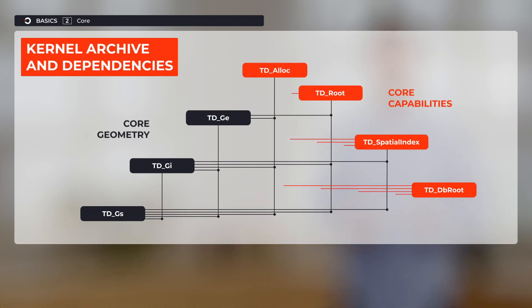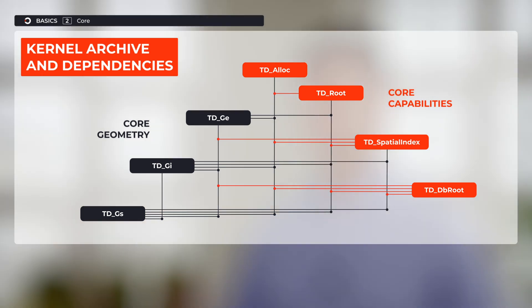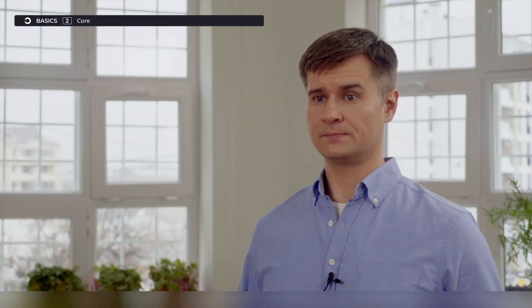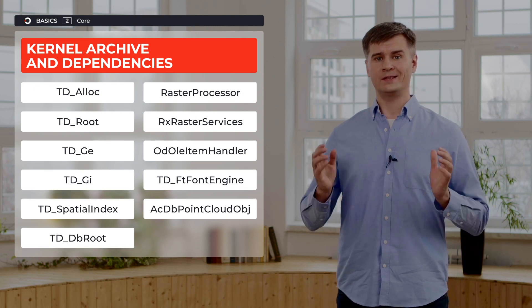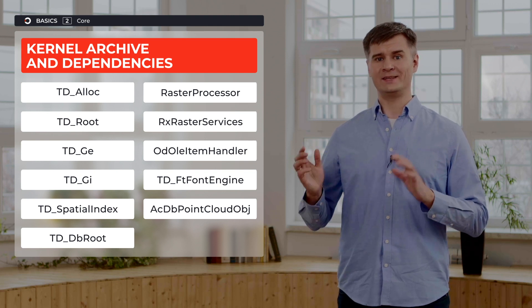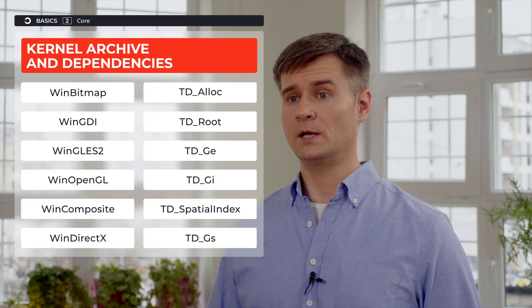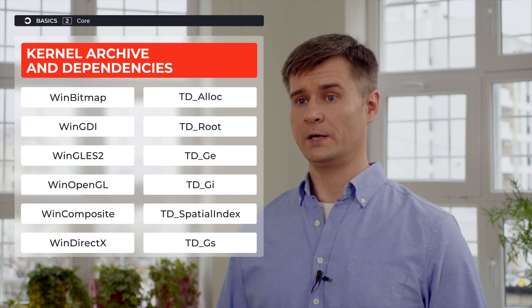Getting deeper into the core ODA capabilities, let us have a look at the kernel archive content. The diagram illustrates the dependencies of the models starting from the topmost. The lower the model is located, the more dependencies it has. Speaking of the object support models in the left column, their list of dependencies is more or less the same and just excludes the TDGS model. So if you are going to support and visualize elements, please be ready to include all those elements in your application.